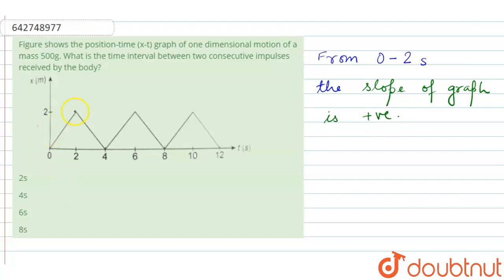Again, from t equals to 2 to 4 seconds, means at 2 seconds, the slope of the graph again changes and it becomes negative.